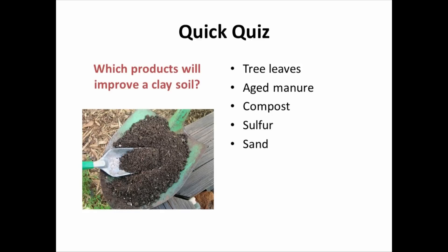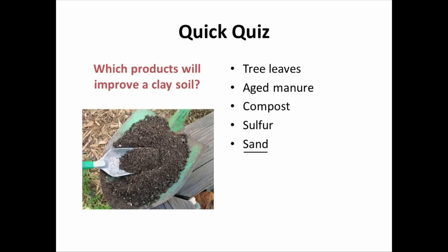Clay soils often have restricted drainage. To improve that drainage, one thing we could do is incorporate compost — that's probably the option that stands out the most. Aged manure and tree leaves can be components of compost, and those could also be included in a correct answer. The trick one is sand. Often times sand is associated with good drainage, but we never recommend adding sand to a clay soil, because that's a recipe for concrete. You want to work with the clay soil you have by adding compost and organic matter, and stay away from trying to change the soil texture by adding sand.